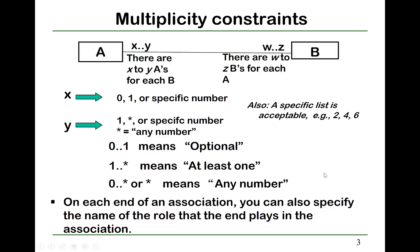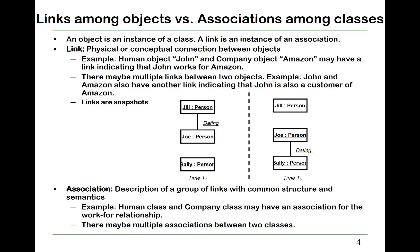On each end of an association, you can also specify the name of the role that end plays in the association, but that's optional. We need to distinguish two concepts: links and associations. Just like an object is an instance of a class, a link is an instance of an association.